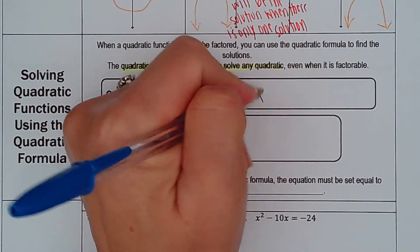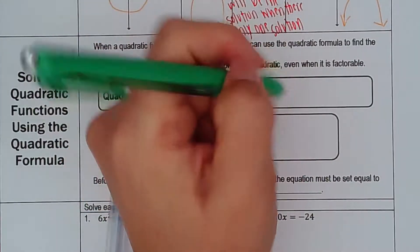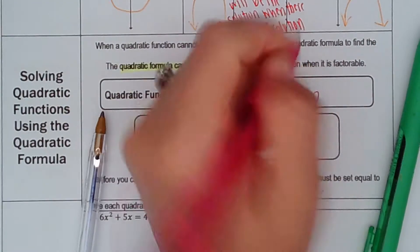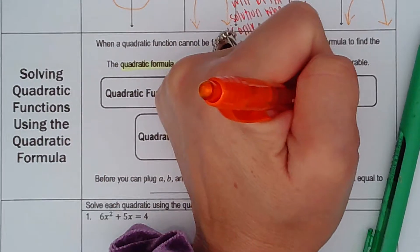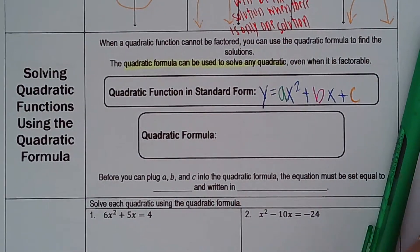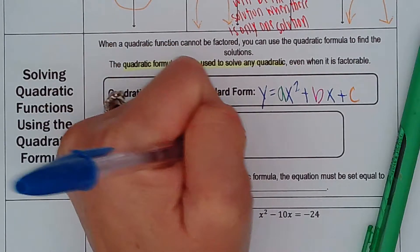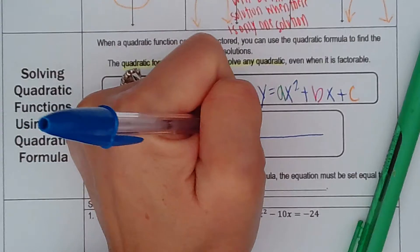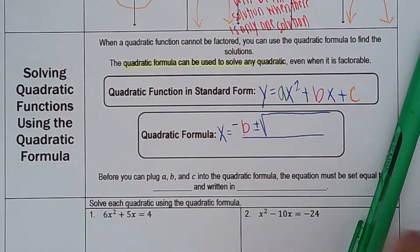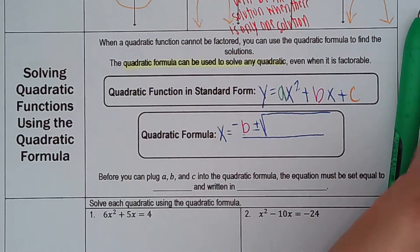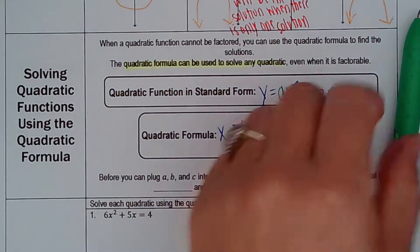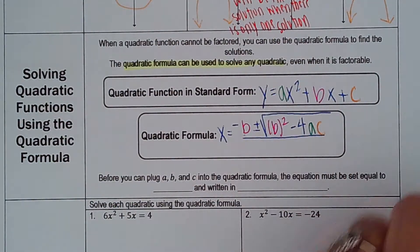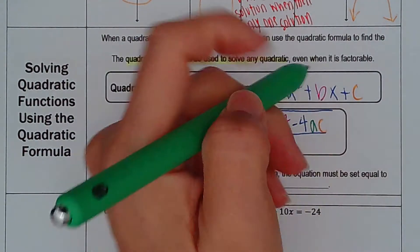The quadratic function in standard form is y equals ax² plus bx plus c. The quadratic formula is x equals negative b plus or minus the square root of b² minus 4ac, all over 2a.